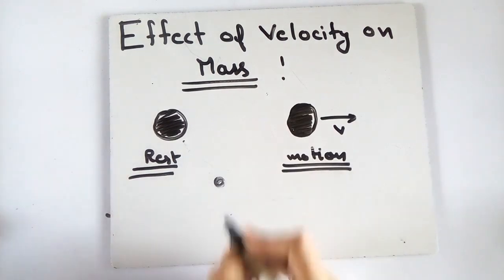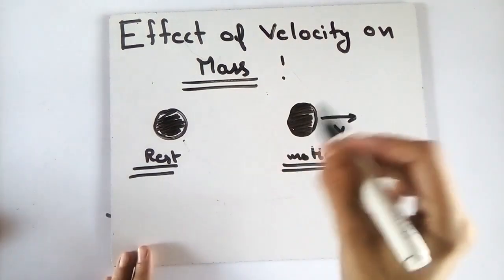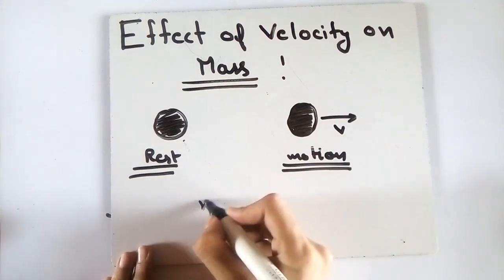For example, a photon at rest has zero mass. But when it moves, it seems to have mass. So as the velocity increases, mass also increases.